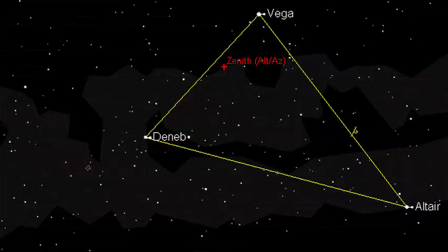In our eyes, Vega appears twice as bright as Altair and more than three times brighter than Deneb.